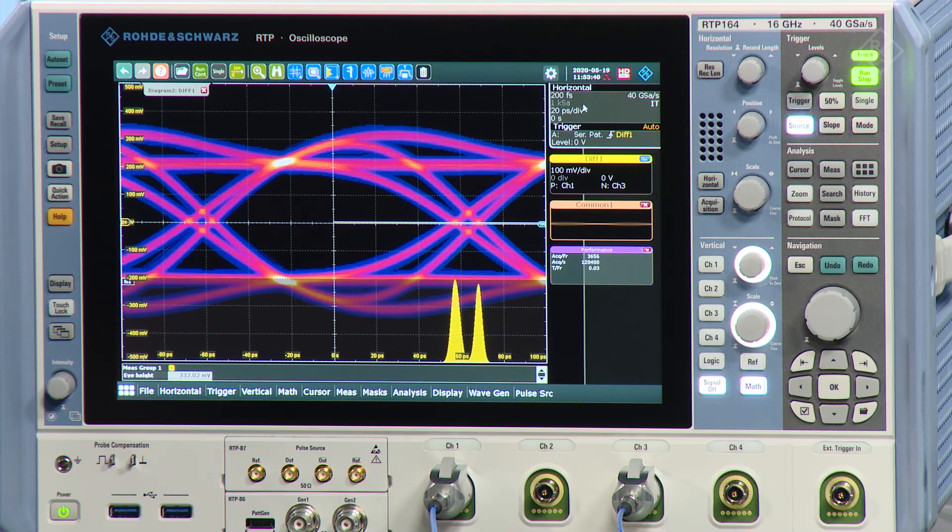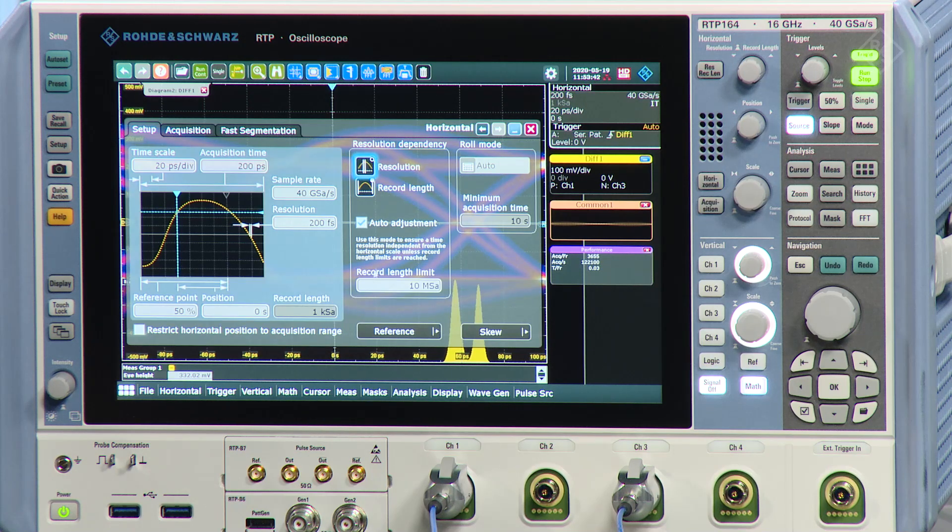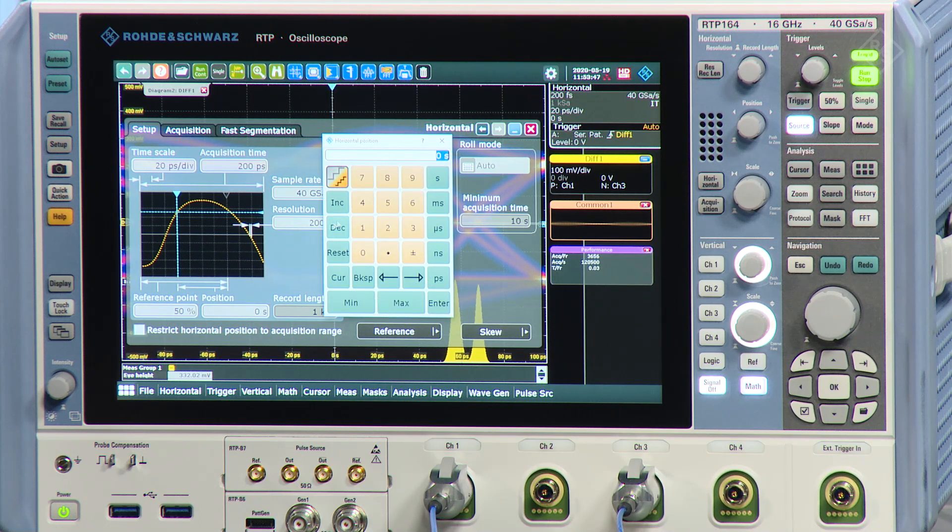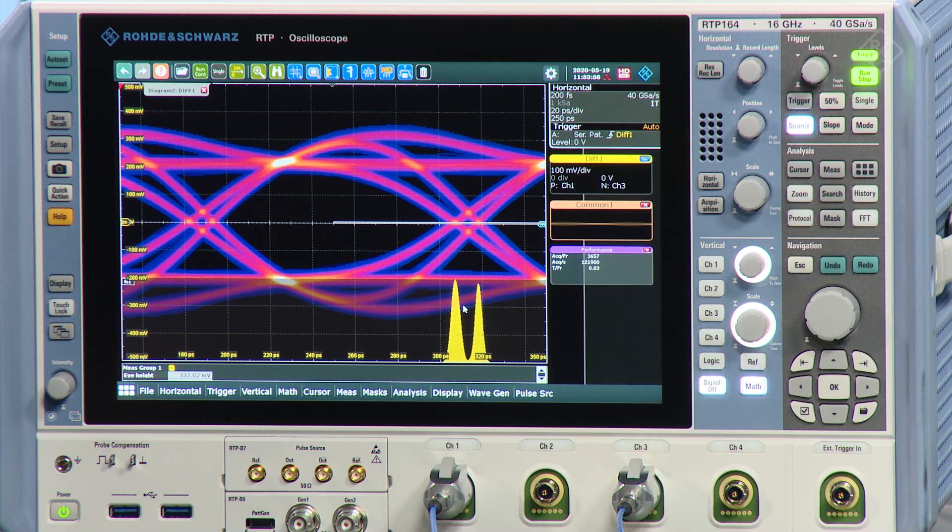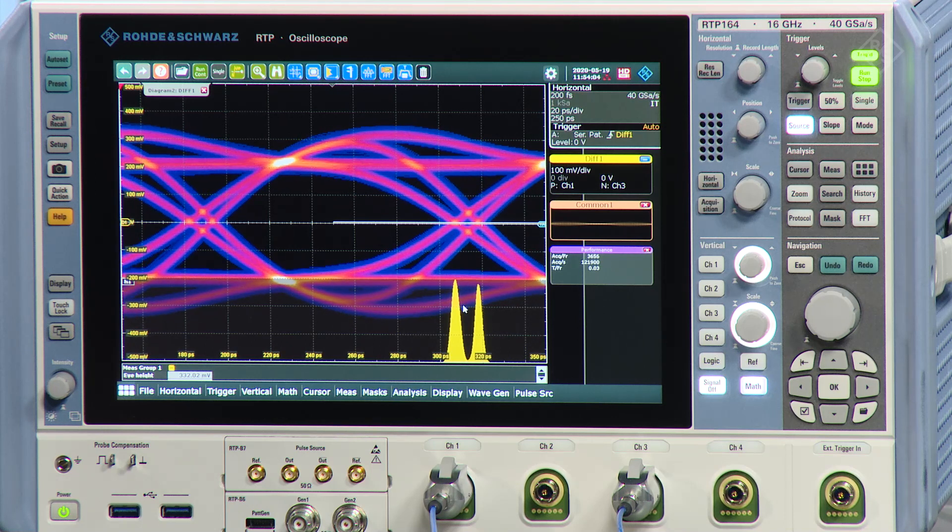It was two UI, it means 250 picoseconds. I see that the histogram is now the same. So this is the advantage of the high-speed serial pattern trigger.